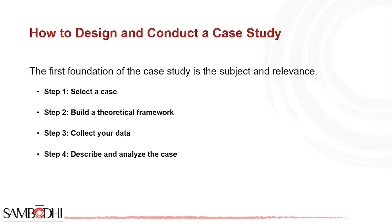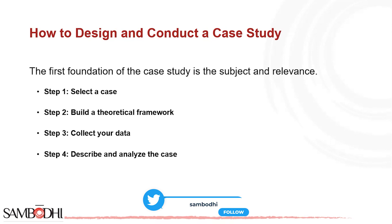An important step is also drafting a research thesis. Step three is to collect your data. There are many different research methods you can use. Case studies tend to collect qualitative data using methods such as interviews, observation, and primary and secondary sources like newspaper articles and photographs. Sometimes a case study will also collect quantitative data. For example, for a case study of a wind farm development in a rural area, you could collect quantitative data on employment rates and business revenue, as well as qualitative data on local people's perceptions and experiences.